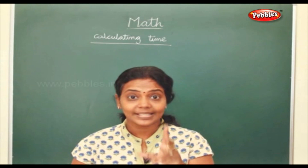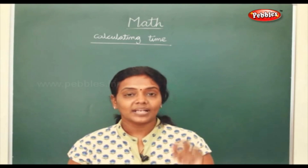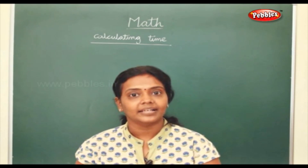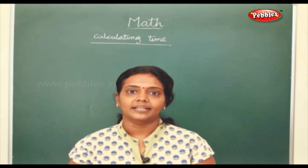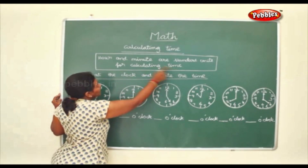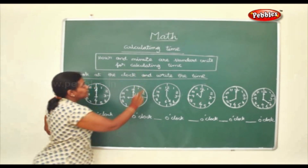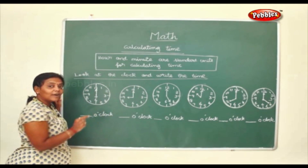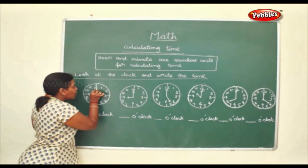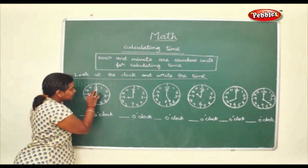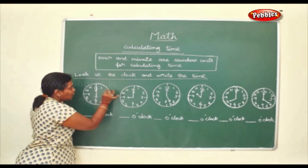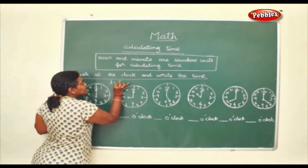Now if you take a close look at your clock you can see two hands. One is called the long hand and one is called the short hand. The short hand is called the hour hand and the long hand is called the minute hand. Hour and minute are the standard units for calculating time. Each time the longer one moves to the next number, it means five minutes have passed by. So for one hour you need 60 minutes.